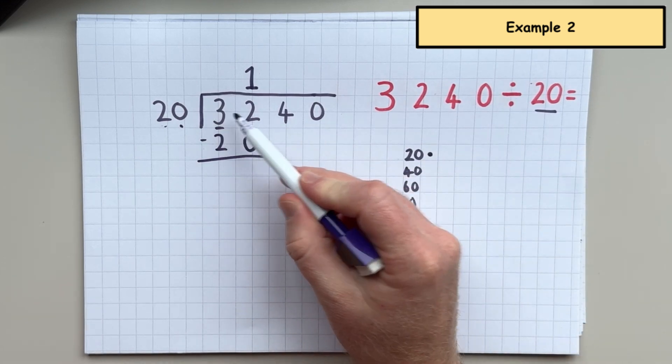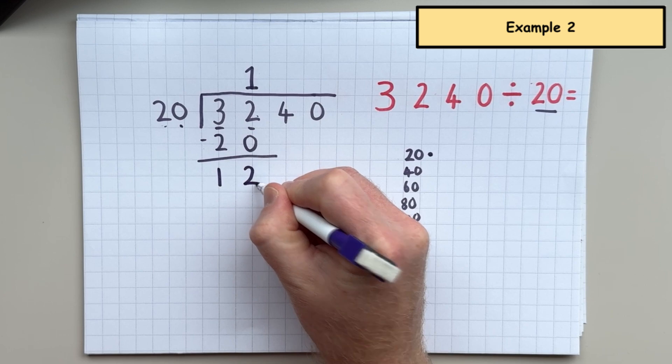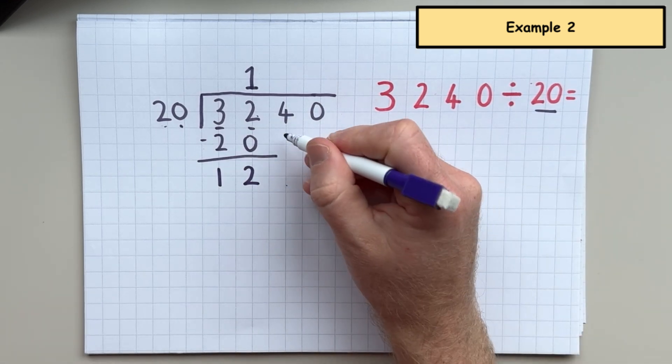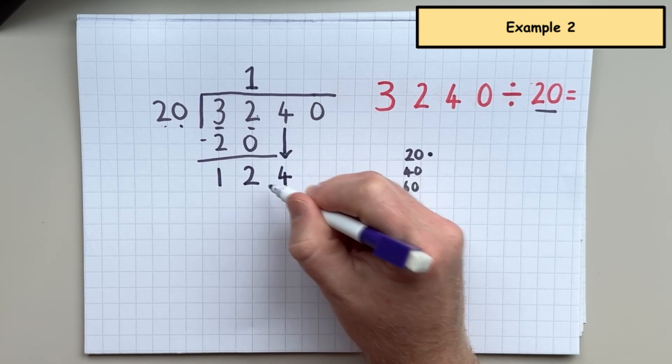So it's 32, take away 20. And that leaves me with 12. Next, I need to bring down this four and put it next to the 12 remainder.